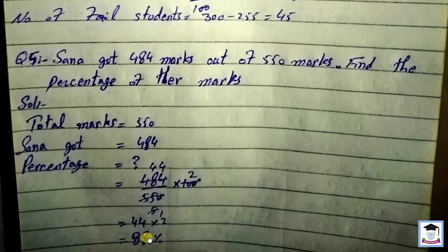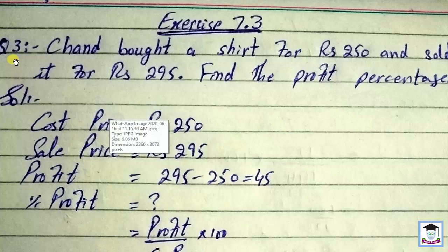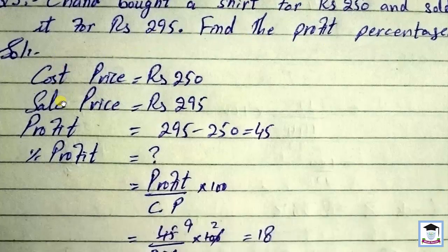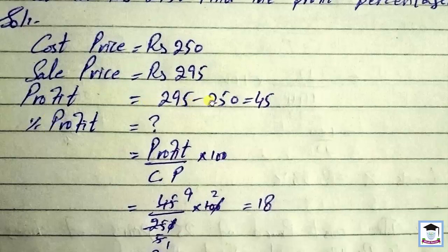Exercise 7.3, Question number 3: Chan bought a shirt for 250 rupees and sold it for 295. Find the profit percentage. Cost price: 250, Sale price: 295. Profit: 295 minus 250 equals 45.